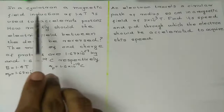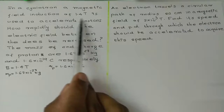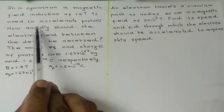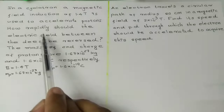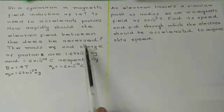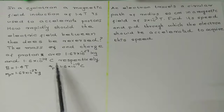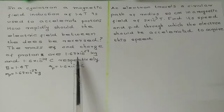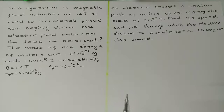In a cyclotron, a magnetic field induction of 1.4 tesla is used to accelerate protons. How rapidly should the electric field between the D's be reversed? The mass and charge of protons are 1.67×10⁻²⁷ kg and 1.6×10⁻¹⁹ coulomb respectively.